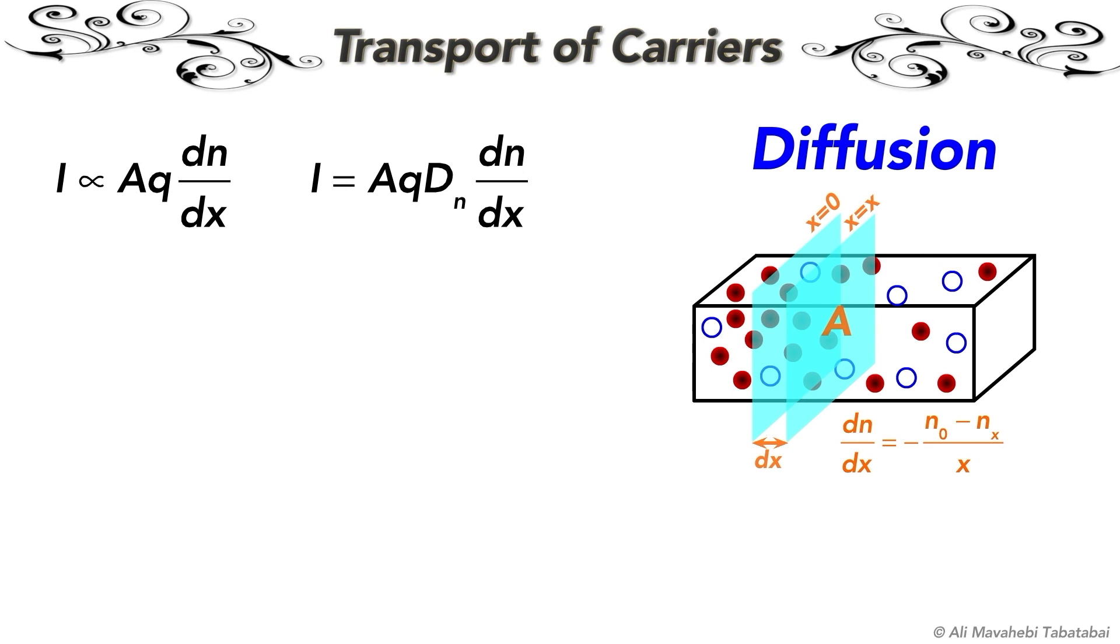So the diffusion current equals cross-sectional area A times charge of an electron or hole Q times diffusion constant DN for electrons or DP for holes times the concentration gradient, dN over dx for electrons or dP over dx for holes.